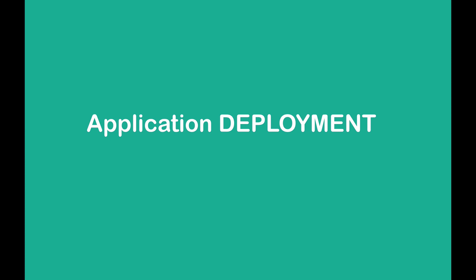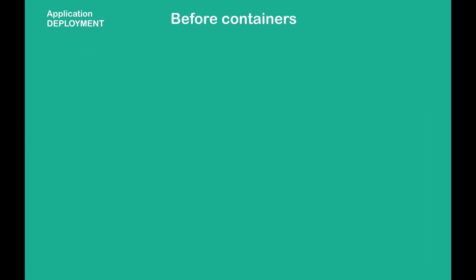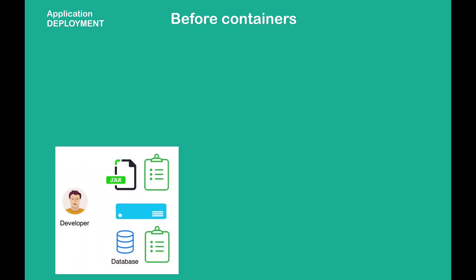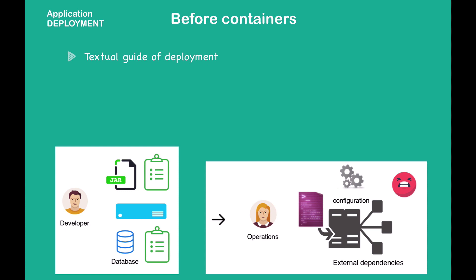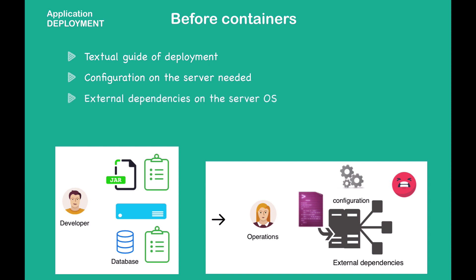Now let's see how containers improve the deployment process. Before containers, a traditional deployment process would have the development team produce artifacts together with instructions on how to install and configure them on the server. You would have a JAR file for your application plus a database service, each with configuration instructions. The operations team would then handle setting up the environment. The problem is you need to configure and install everything directly on the operating system, which could lead to conflicts with dependency versions and services running on the same host.